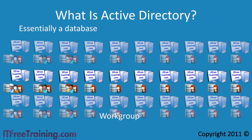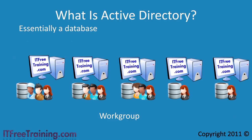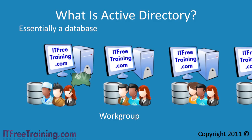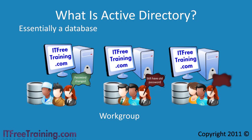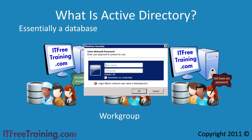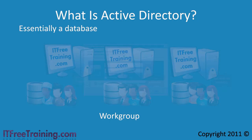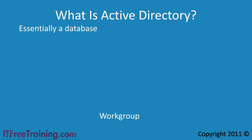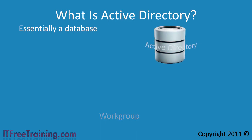The second problem occurs when a user changes their password. When this occurs and they attempt to access another computer on the network, the passwords will be different. Because of this, the user will be prompted for a username and password when attempting to access the other computer. The user can then use their old password to access the computer, or the password needs to be updated on the remote computer to reflect the change. The problem occurs because there is no way to keep all the usernames and passwords in sync with each other. In order to do this, you could use a centralized username and password system such as Active Directory.